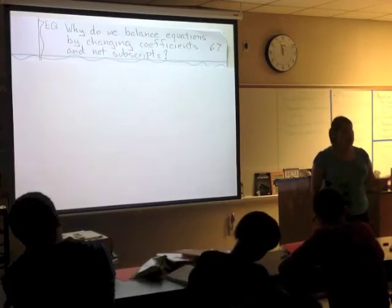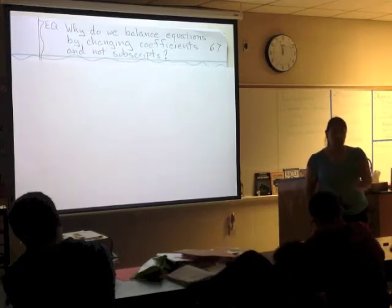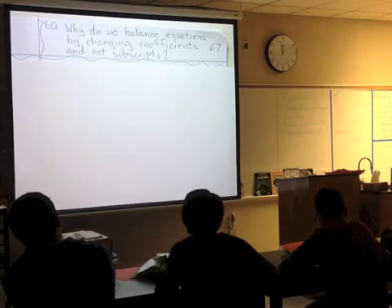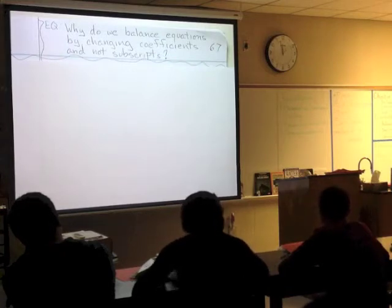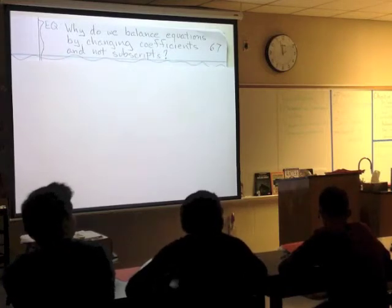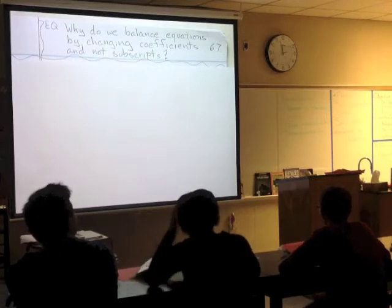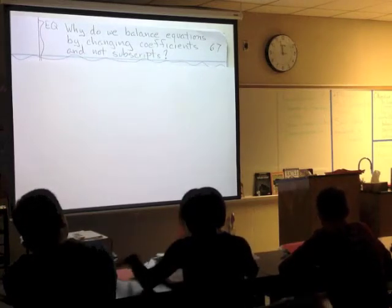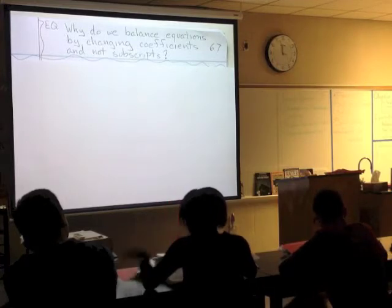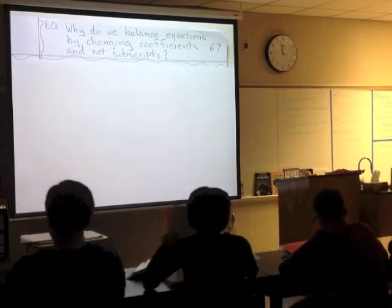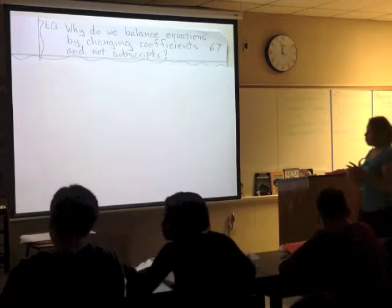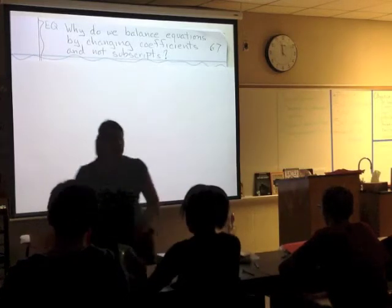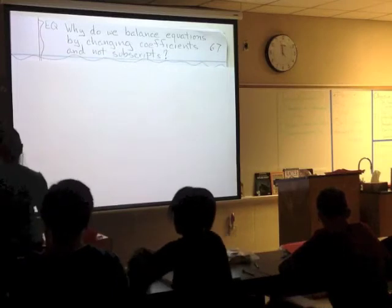Now the subscript is the little number. What are the little numbers telling us? How many atoms do you have of that element. Very good — how many atoms you have of that atom. So if I say H2, that tells me I have two hydrogens that are stuck together. Our central question is: why when we balance, we only change coefficients and not subscripts?